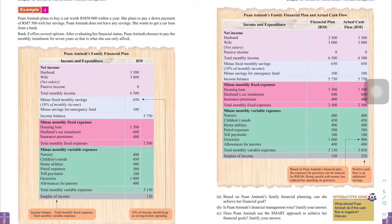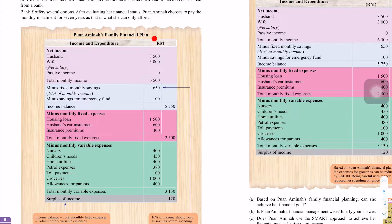Kita tengok dulu dia punya Puan Aminah family financial plan. Kita ada income and expenditure. Net income pendapatan tetap. Ini family eh. Husband, dia ada gaji RM3,500. Wife, RM3,000 net salary. Passive income tak ada. So, total monthly income adalah RM6,500. Ini bulat-bulat daripada gaji suami dan isteri. Minus fixed monthly saving. So, dia ada monthly saving, 10% of monthly saving which is RM650. Minus saving for emergency fund, RM100. So, lepas tolak RM750, tinggal lagi balance RM5,750.